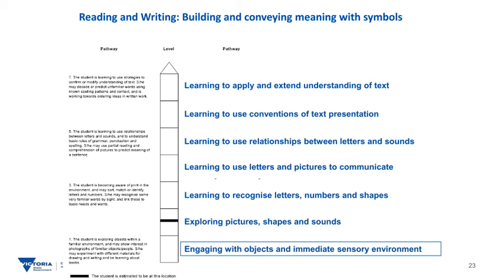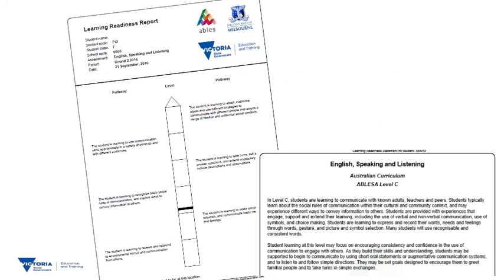So if you have a look at the continuum, you will see starting at a very basic level of engaging with objects and immediate sensory environment all the way up to those students who are learning to apply and extend understanding and produce different texts for different purposes. This is an example of an actual report on a student looking at the area of speaking and listening. As you can see on the first page, the student is working at the very early stages of level C because they're in the third box. The first page will show you the rocket of where the child is and there will be a little descriptor along the rocket to tell you exactly where the child's working at that point.